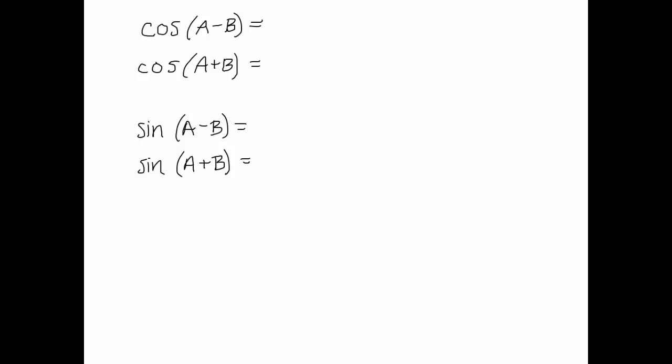We'll actually talk about the proof of these in class at some point. So the first set, I have the cosine of A minus B. That's going to be the cosine of A times the cosine of B plus the sine of A times the sine of B. Notice, you didn't just distribute the cosine. It doesn't distribute.